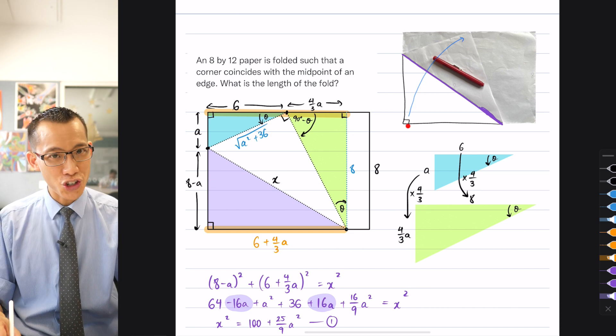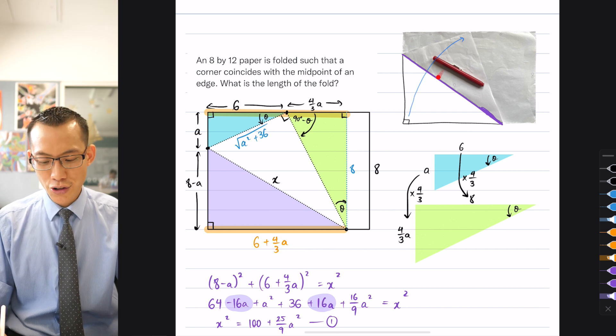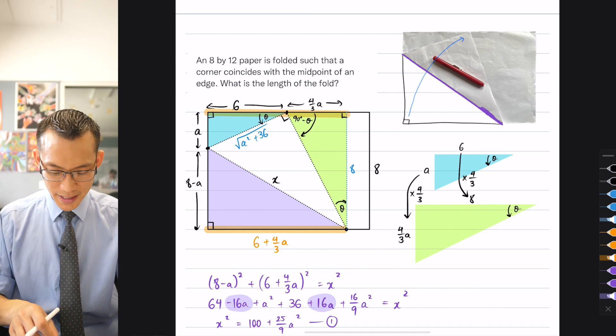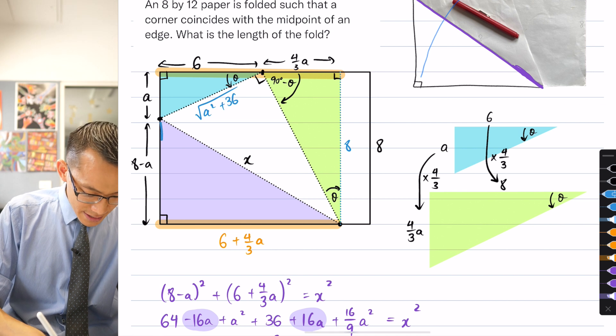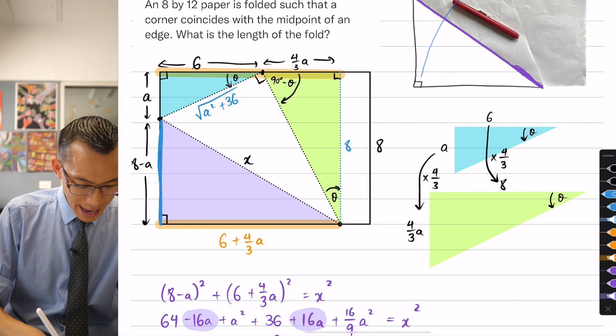This is not the only relationship that's being preserved when you folded this piece of paper. Not only is there a right angle here and a right angle here, look closely.